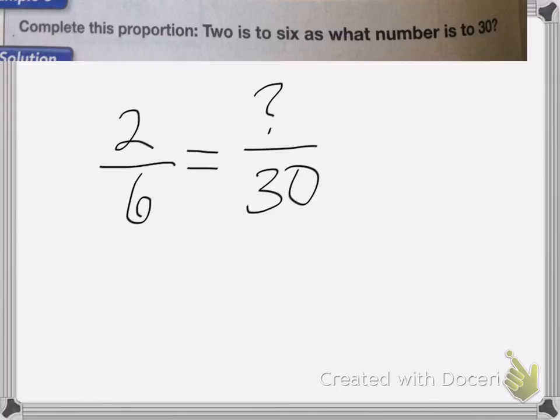Here we can figure out what constant factor we have between these numbers. You can think six times what equals thirty? Well, six times five equals thirty, and whatever I do to the bottom, I have to do to the top. So multiply the top by five as well, and two times five is ten. So two-sixths is the same as ten over thirty.